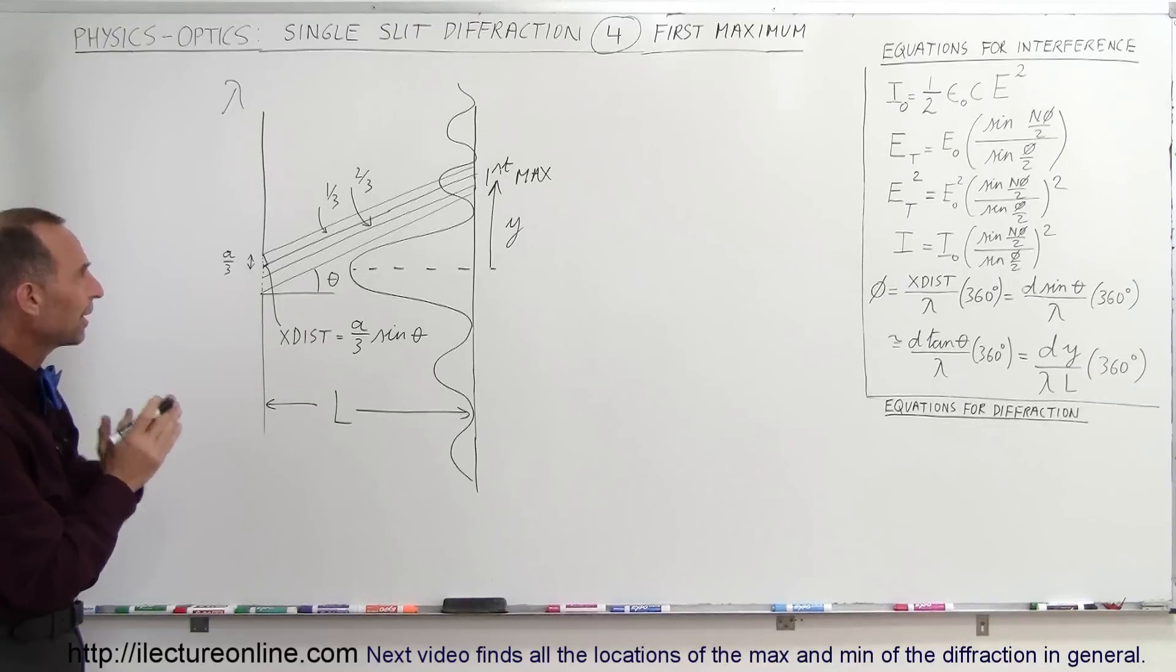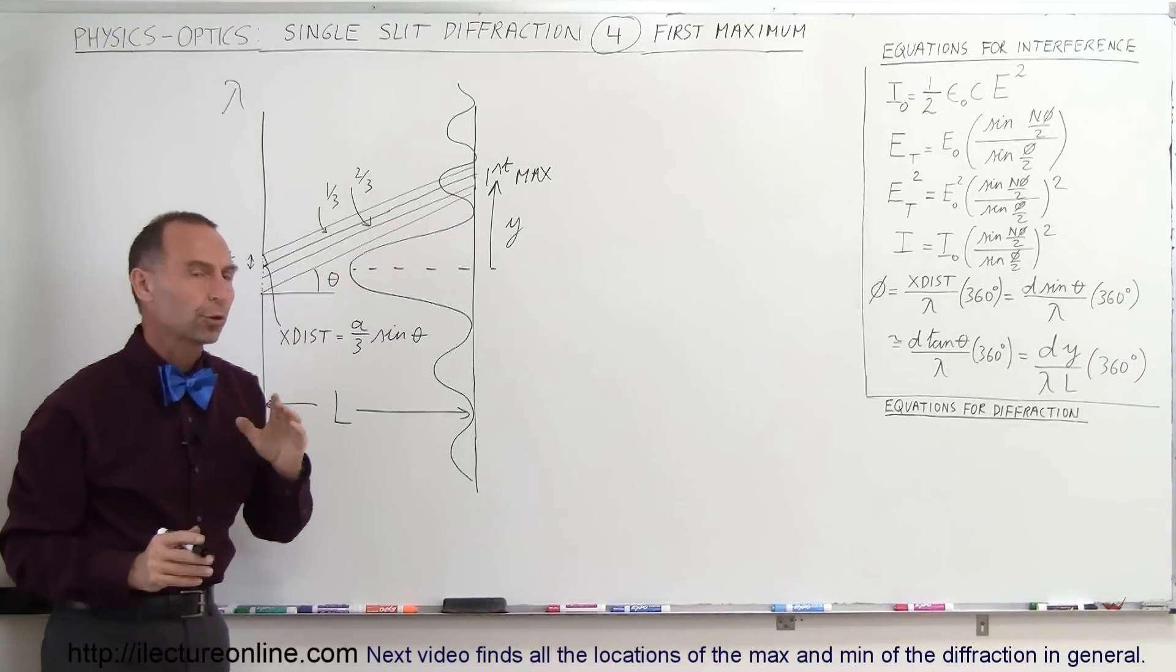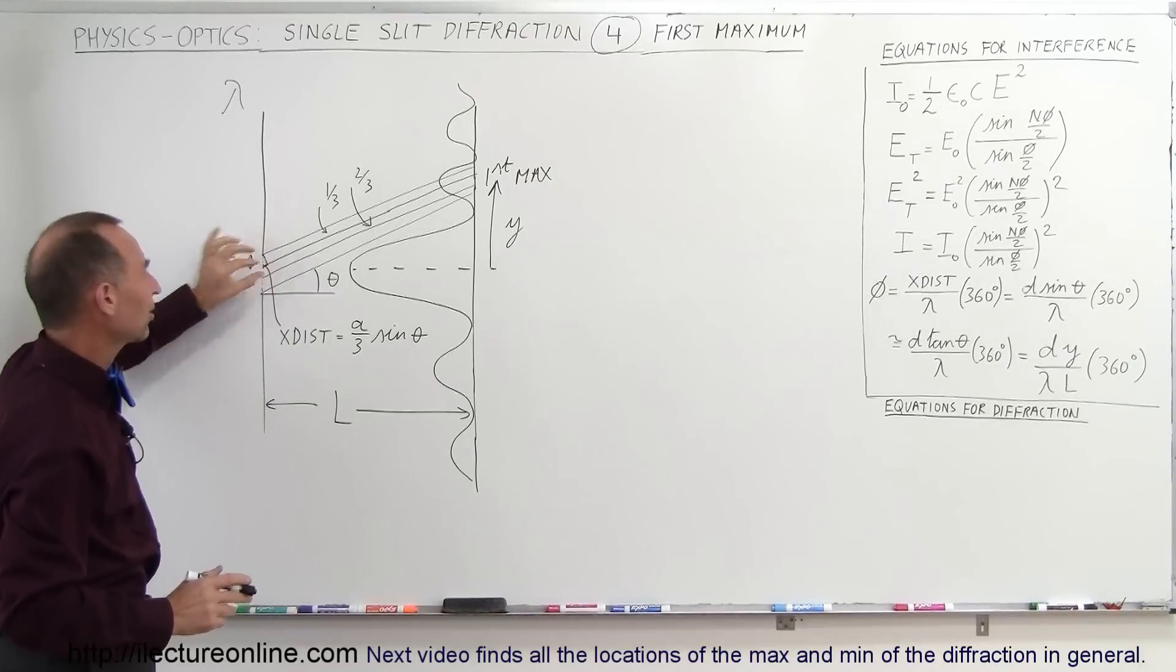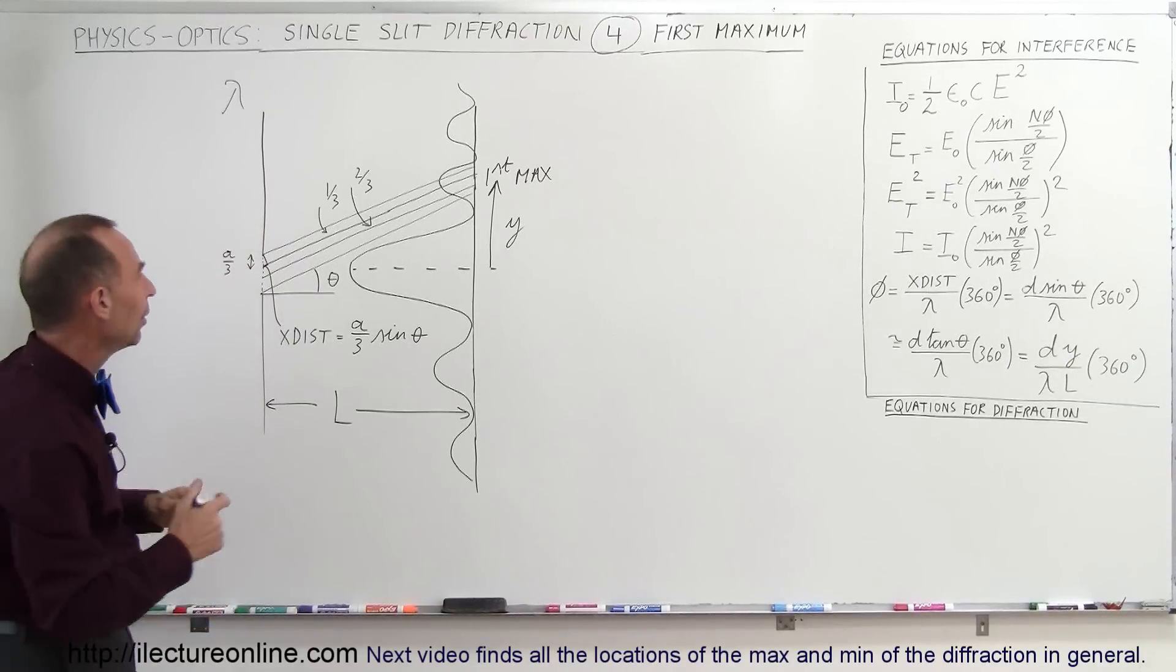And what we're trying to do here is we're trying to find out where that first maximum occurs. So you have to have a lookup angle in such a way that the first third of the beam will cancel out the second third of the beam. How does that happen?